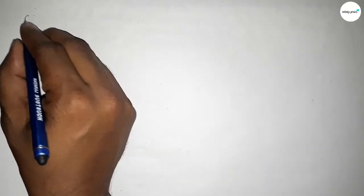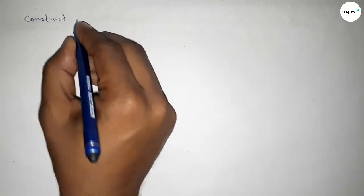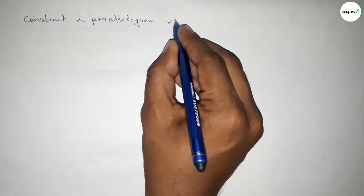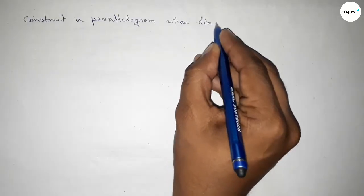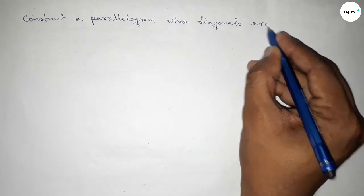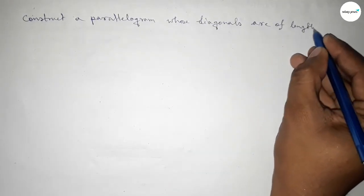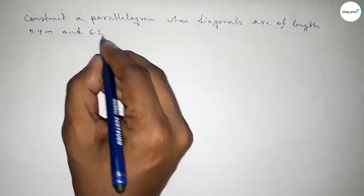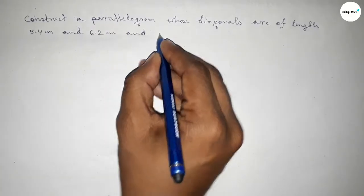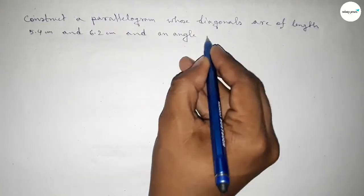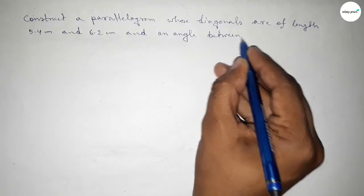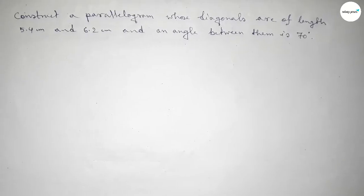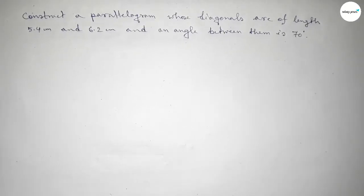Hi everyone, welcome to SI Share Classes. Today in this video we have to construct a parallelogram whose diagonals are of length 5.4 centimeters and 6.2 centimeters, and the angle between them is 70 degrees. So we have to construct a parallelogram with the help of two diagonals and an angle between them. Let's start the video.